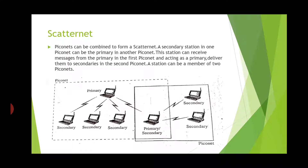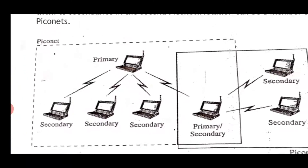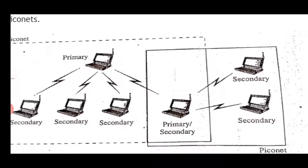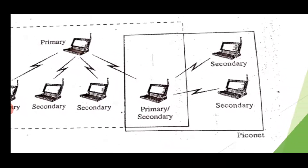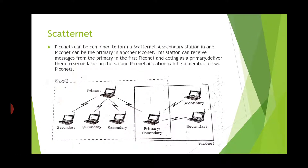Piconets can be combined to form a Scatternet. A secondary station in one Piconet can be the primary in another Piconet. This station can receive messages from the primary in the first Piconet and, acting as a primary, deliver them to the secondaries in the second Piconet. A station can be a member of two Piconets. So a Scatternet is a number of Piconets combined together.